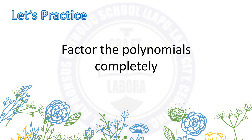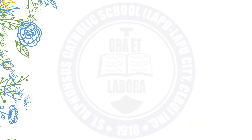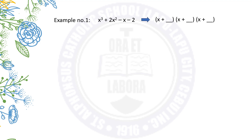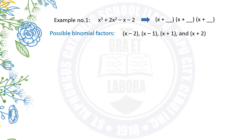Let's have a practice. Factor the polynomials completely using the factor theorem. For example number 1: x cubed plus 2x squared minus x minus 2. The possible number of factors is 3, because the degree of the polynomial is 3. Since the constant term is negative 2, we consider its factors: negative 2 and 1, or negative 1 and 2. Therefore, its possible binomial factors are x minus 2, x minus 1, x plus 1, and x plus 2.